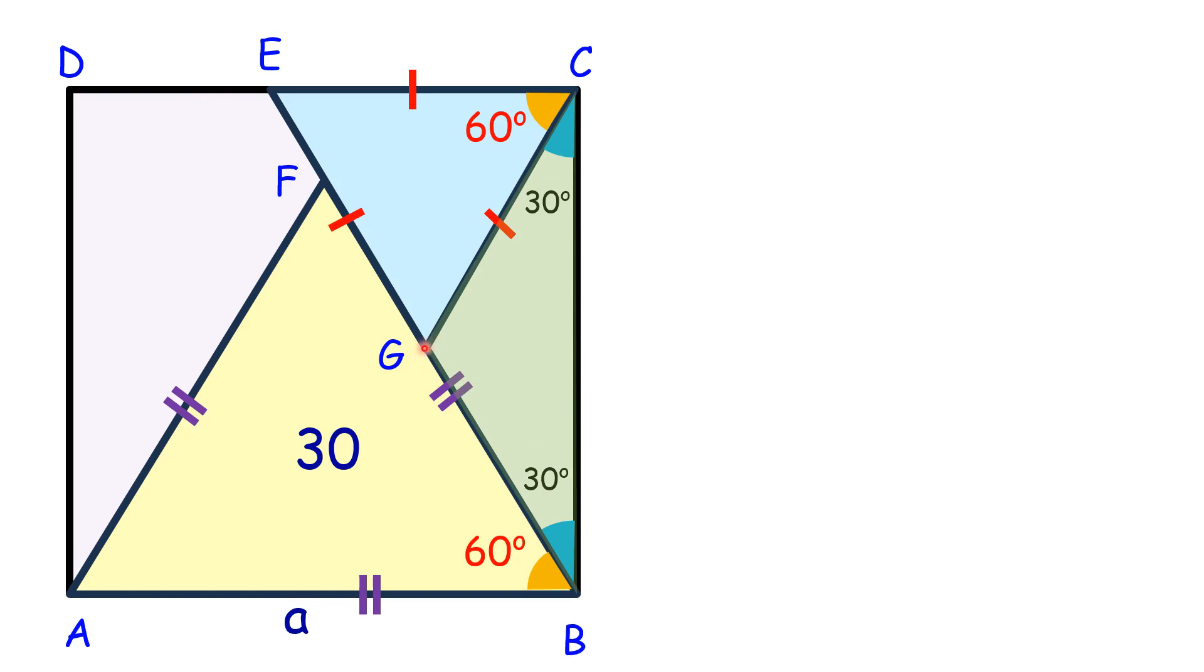Let's drop a perpendicular from G. In an isosceles triangle, the altitude is also a median, so CH and HB are equal in length. The full length is a, so CH is a/2 and HB is a/2.